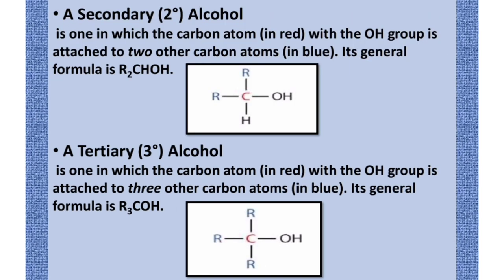After primary alcohol, in secondary alcohol, the carbon atom bearing the OH group is attached to two other carbon atoms. In tertiary alcohol, it is attached to three other carbon atoms. The main difference: if the OH-bearing carbon is attached to one carbon atom it is primary; if two, it is secondary; if three, it is tertiary alcohol.